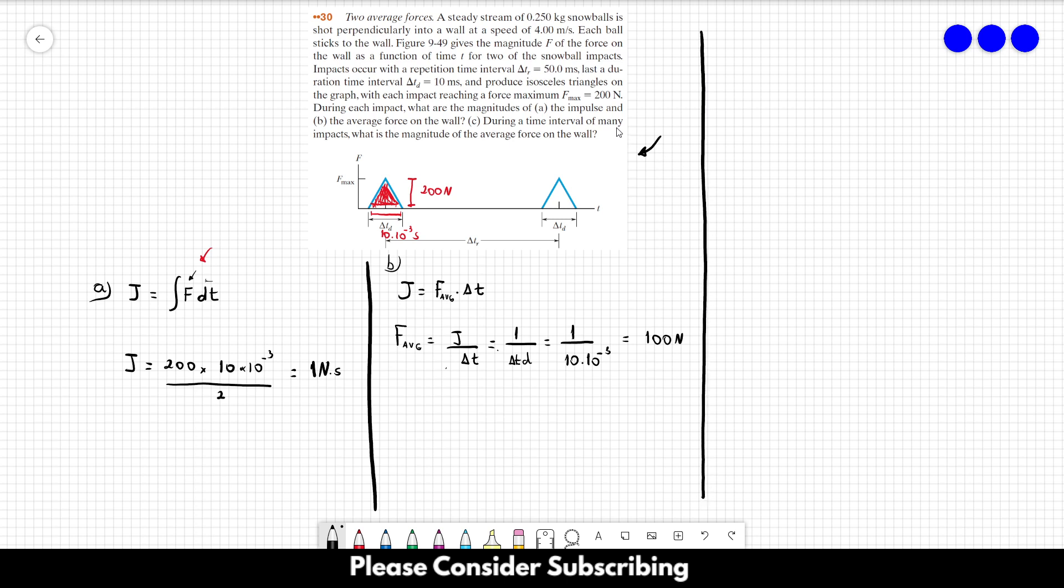For letter C, we want the average force during a time interval of many impacts. So we have to consider, you start throwing one ball over here and then the second one starts over here, right? So now this is our time interval which is equal to tr. I just changed it a little bit to the left, right, so it starts at the beginning of each triangle. So that's all we have to do.